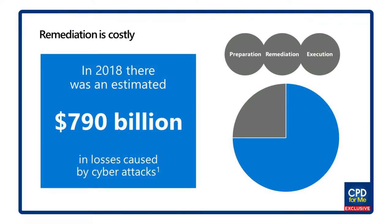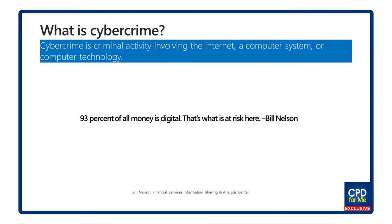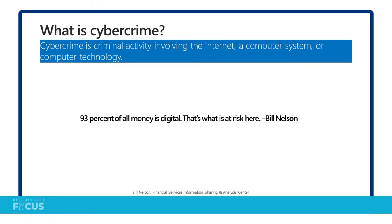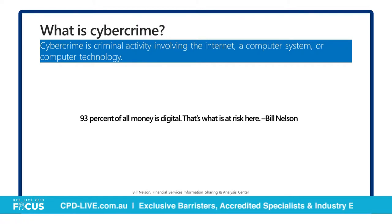There were $790 billion in losses caused through cyber attacks in 2018. What actually is cybercrime? Cybercrime is in essence just criminal activity — it involves the internet, a computer system, and some form of computer technology. Where it really comes into its own is that 93% of all the money in the world is digital, so if it's digital, it's very easy to steal.